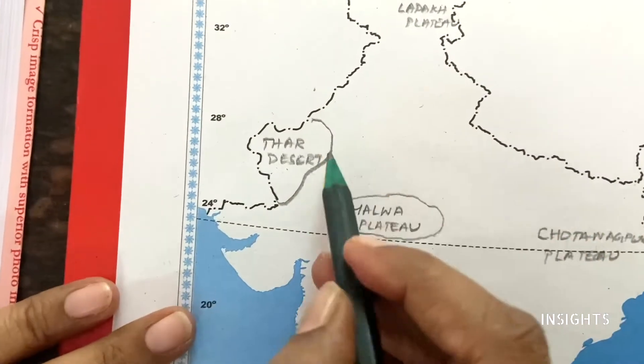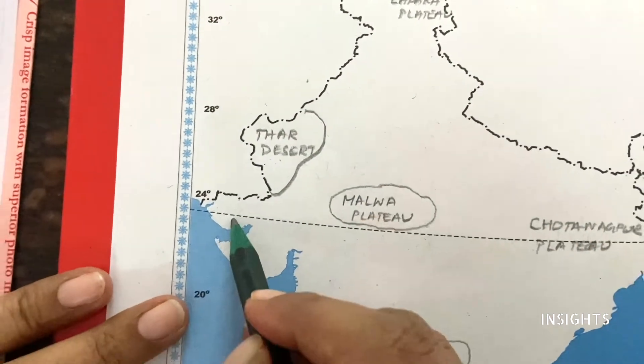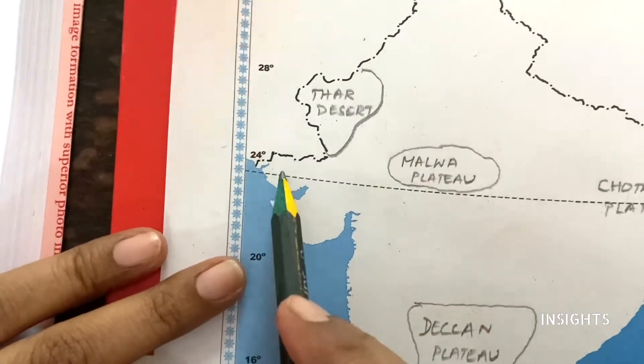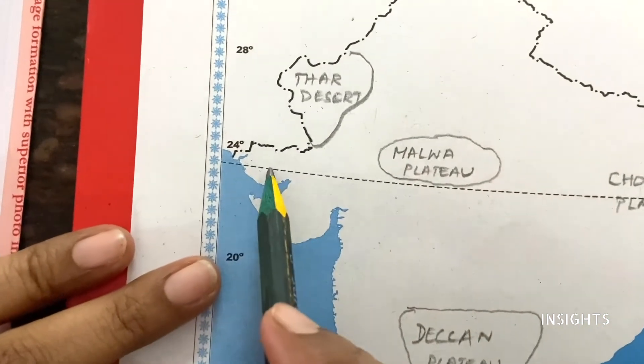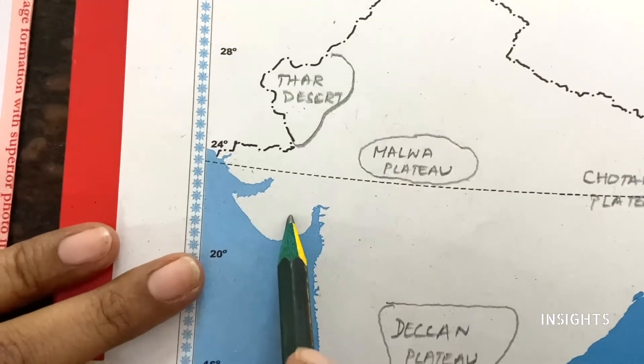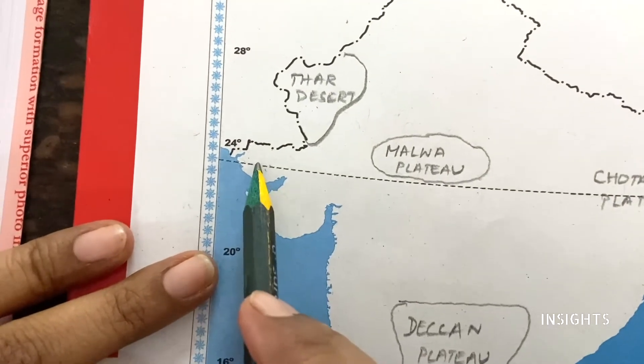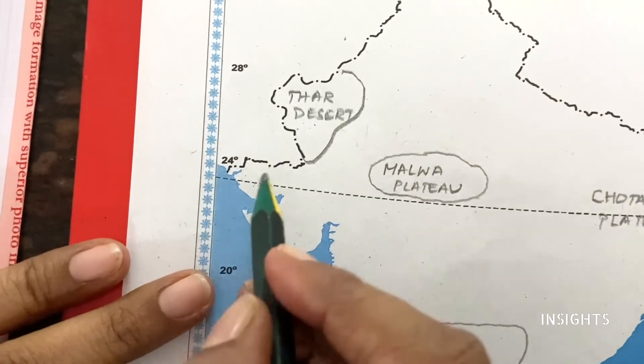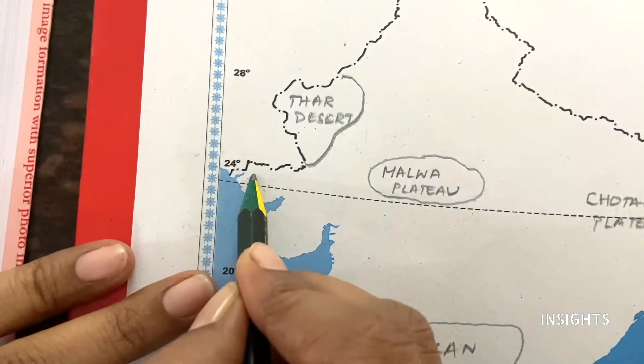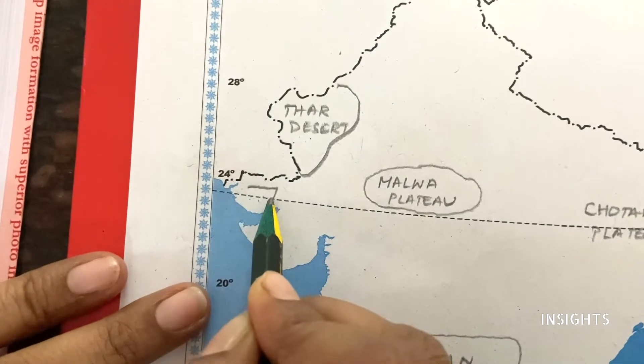Just below the desert, there are two unique things. These are gulfs. In the land, there is the land of Kutch - it is a marshy land.